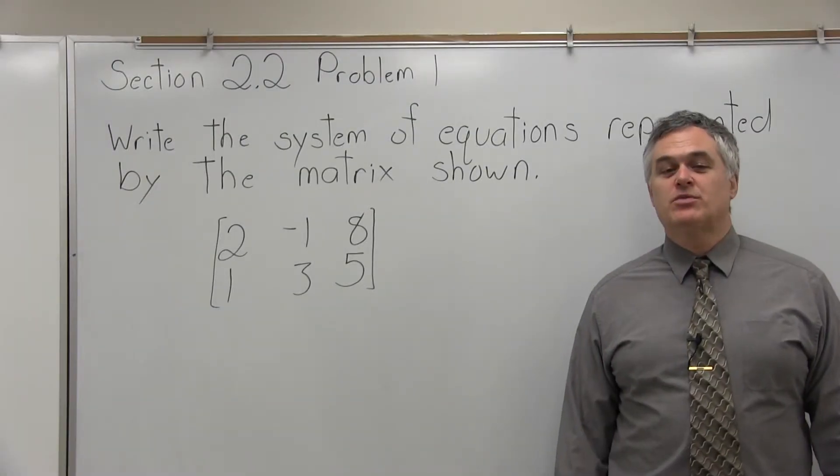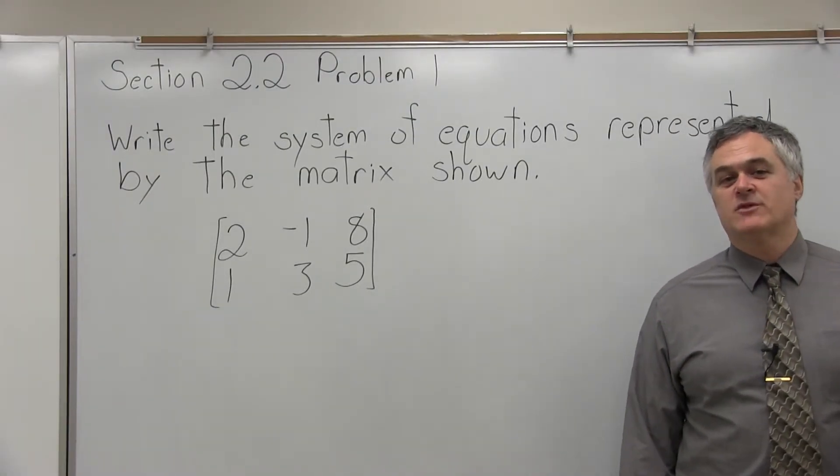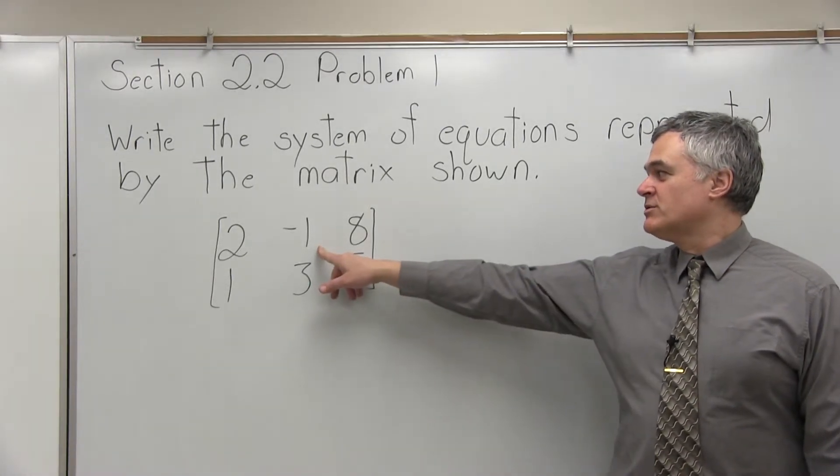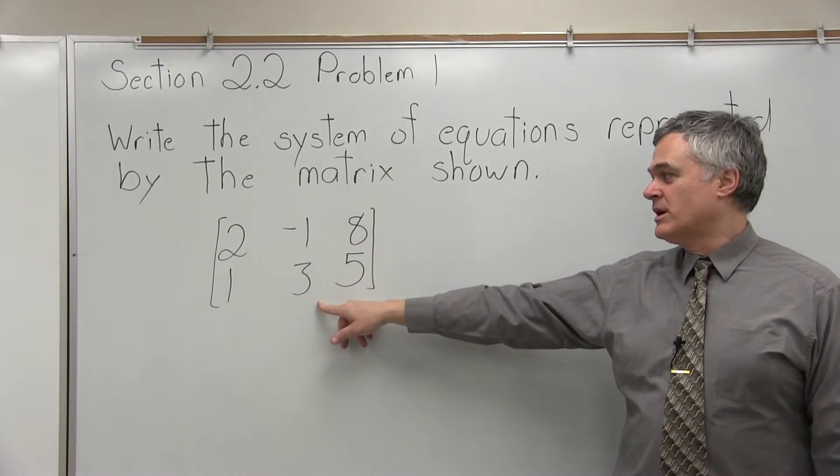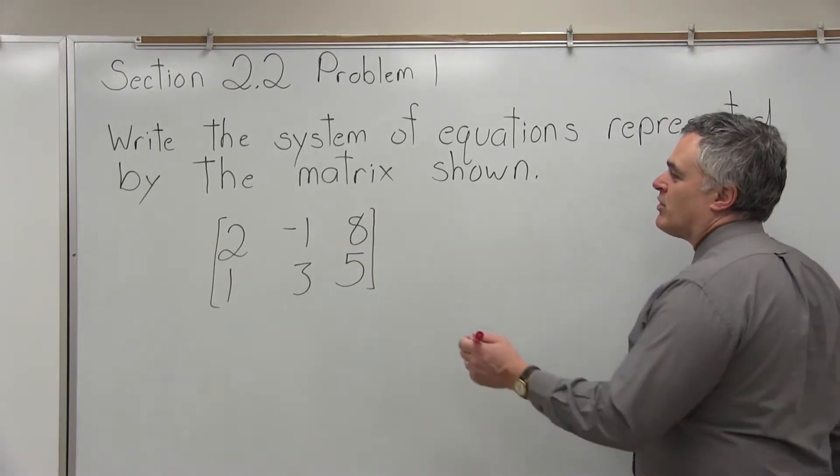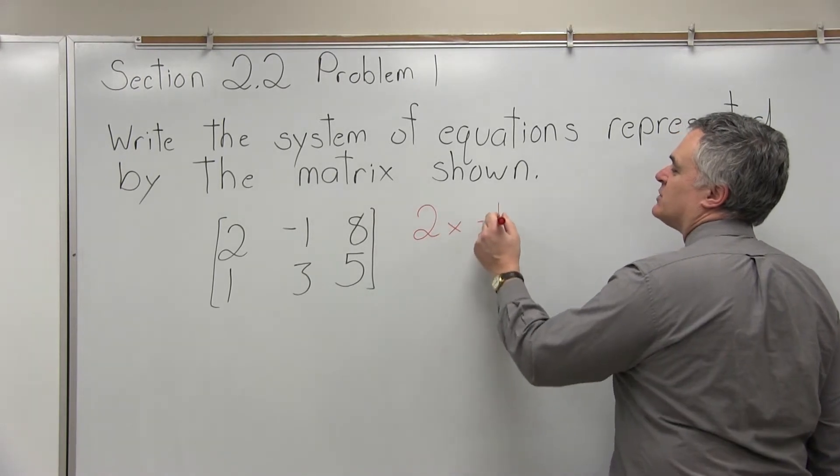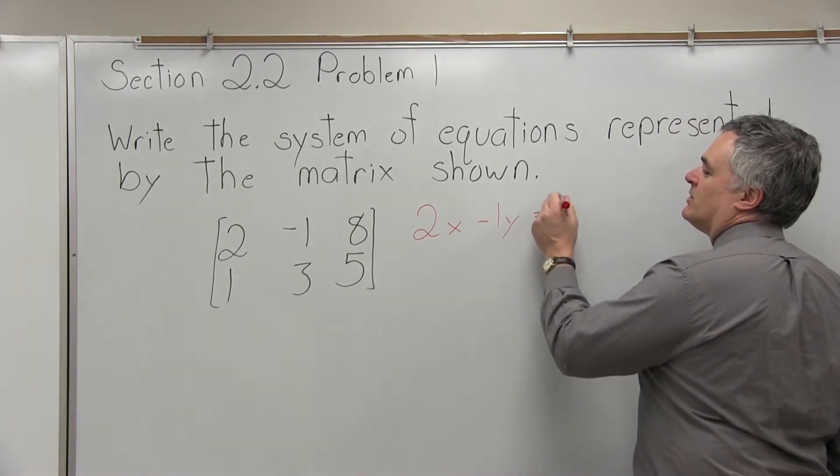This is Section 2.2, Problem 1. It says write the system of equations represented by the matrix shown. So we have a small matrix, 2, negative 1, 8 across the top row and 1, 3, 5 on the bottom. So that top row of the matrix represents the equation 2x minus 1y equals 8.